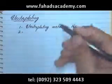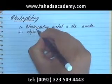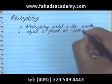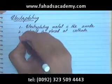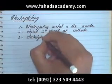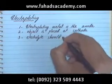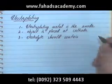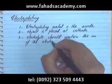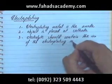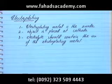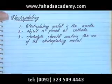Our second rule: the object that needs to be electroplated is always placed at the cathode. Our third rule is that the electrolyte should contain the ion of the electroplating metal, which means you don't want any other ions in the electrolyte, otherwise they would be competing for a spot at the cathode. So you don't want impurities there. Let's start with an example.